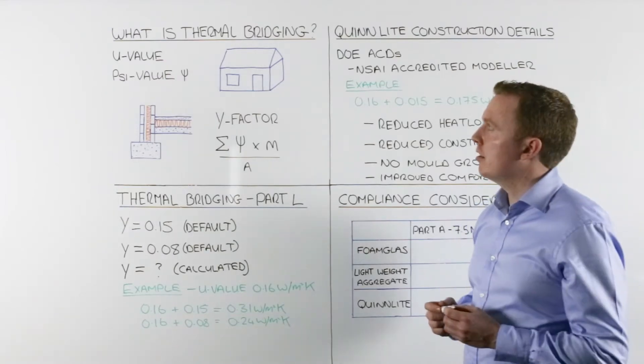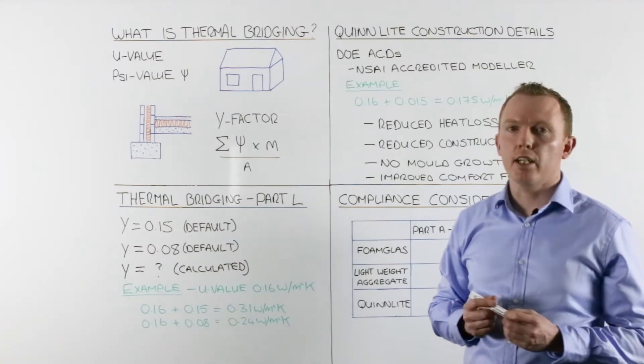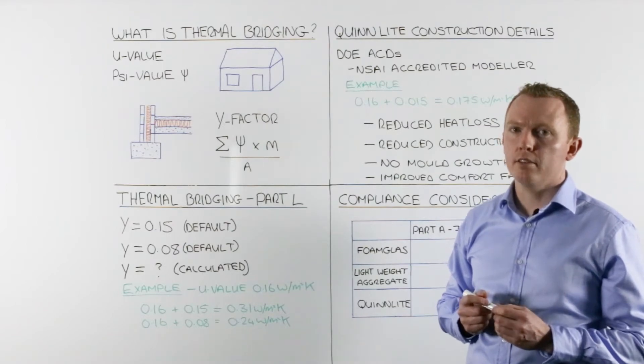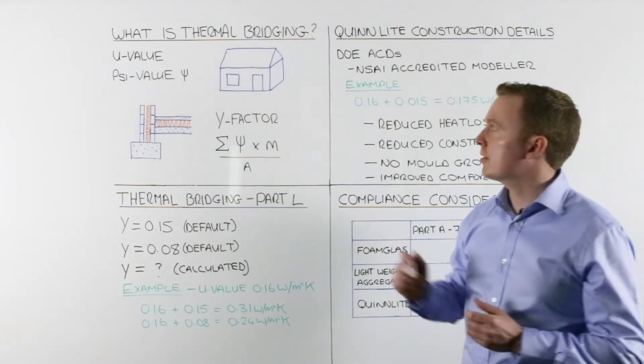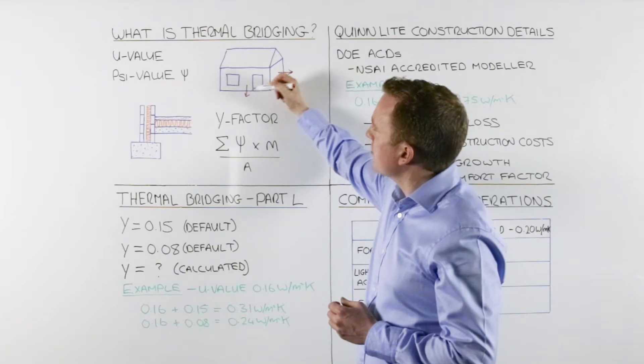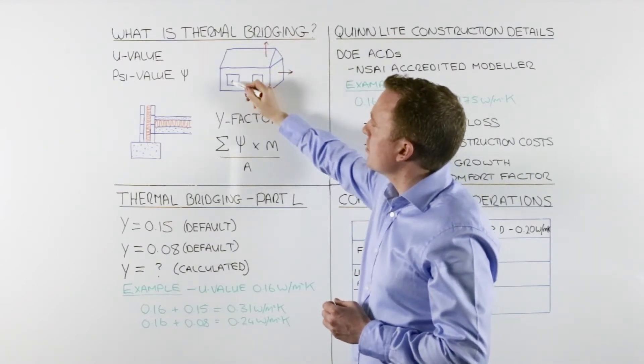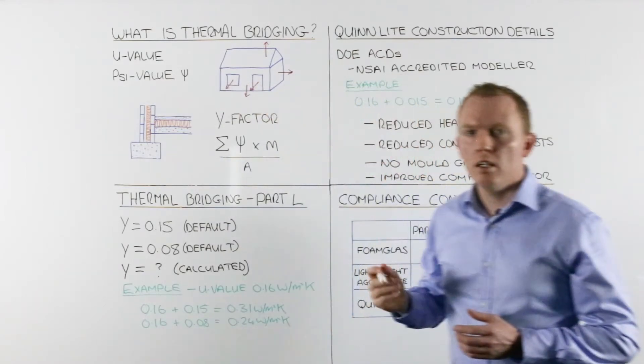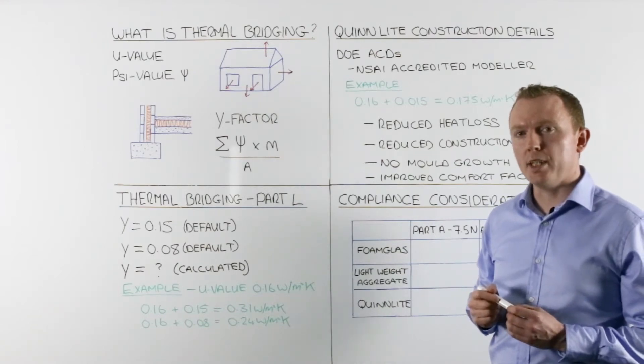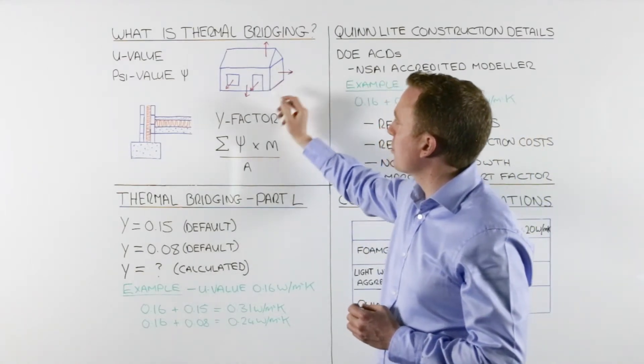Firstly, we look at what is thermal bridging. To explain this, we need to cover U-values. A U-value measures heat loss per square meter out through all our building elements—that is, out through our walls, down through our floors, up through our roof, and out through our windows and doors. But unfortunately, what U-values don't cover is the heat loss at the junction between these elements.